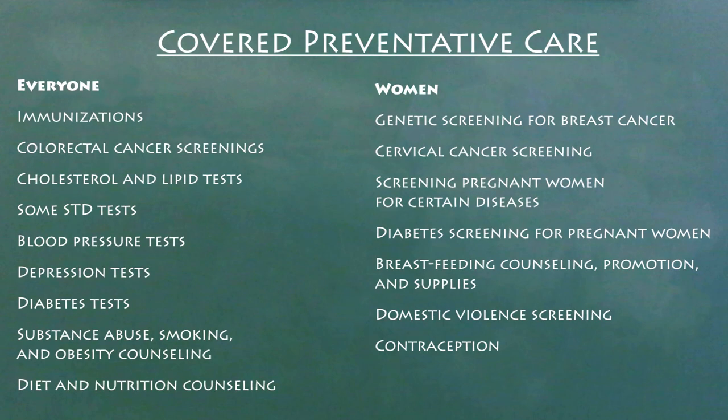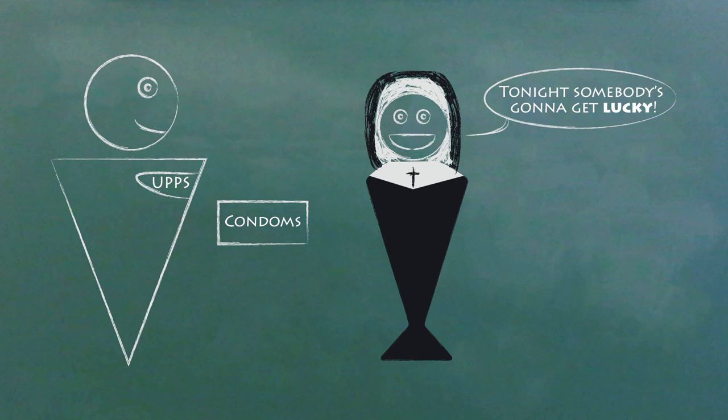Third, by 2014, all plans need to cover certain preventative measures with special ones just for women, like contraception. Certain religious workplaces don't have to pay for contraception. This was a change in the policy after the issue got really big in the news.